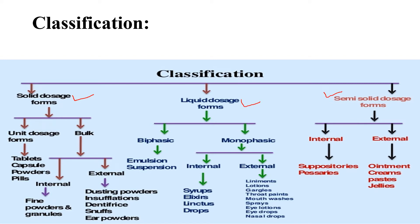Solid dosage forms may be classified into two types: unit dosage and bulk dosage. Unit dosage forms include tablets, capsules, powders, and pills. Bulk dosage has two sub-types — internal and external. Internal bulk forms include iron powders.